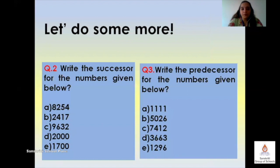Let's do some more. In question number 2 you are to find the successor of these numbers by adding 1 to them and in question number 3 you are to find the predecessors of the numbers given below by subtracting 1 from them.